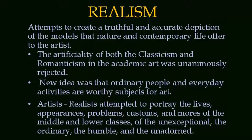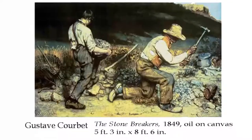Artists — the Realists — attempted to portray the life, appearances, problems, customs, and social situation of the middle and lower classes: the unexceptional, unassuming, ordinary, humble. And this is what you will see in the paintings done by very famous painters of the Realism movement — Courbet, Millet, Daumier, and others.